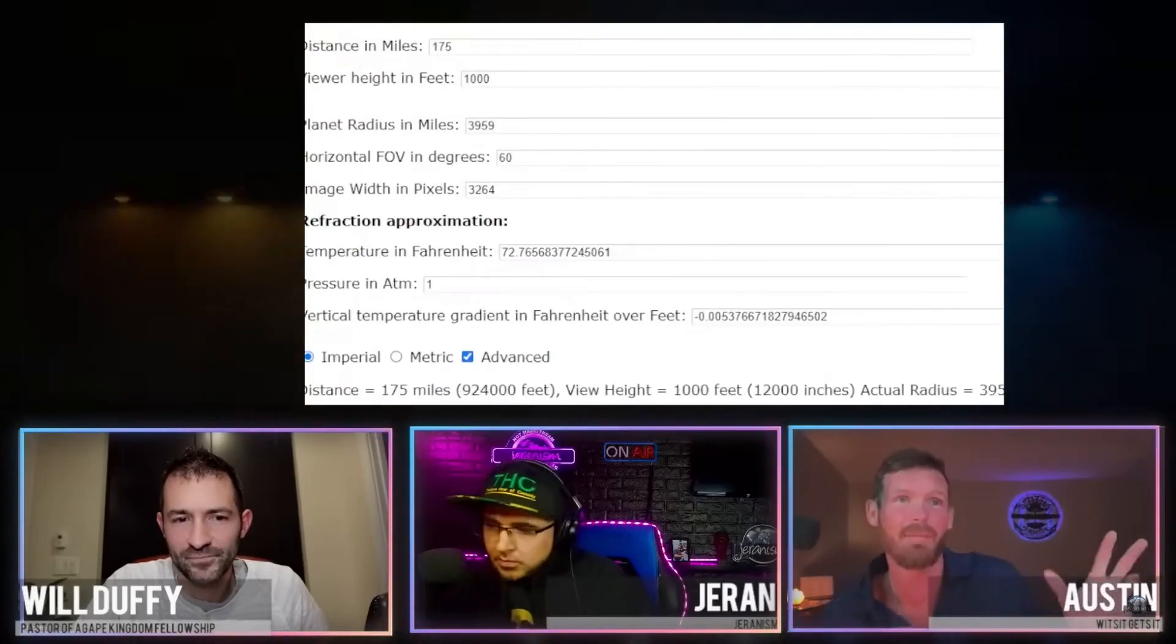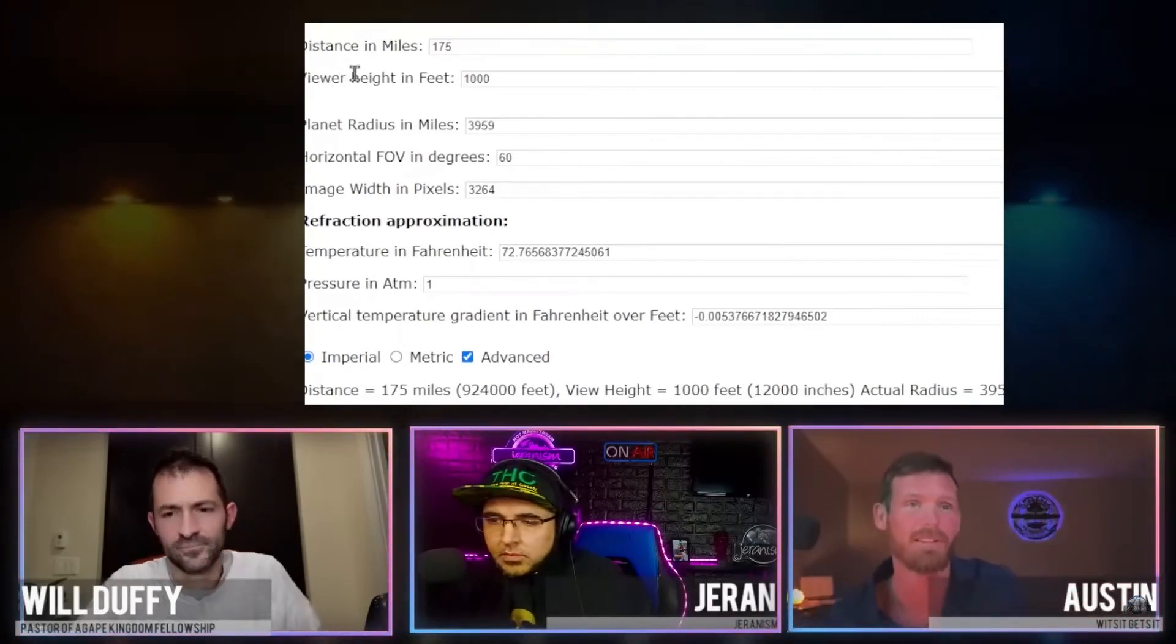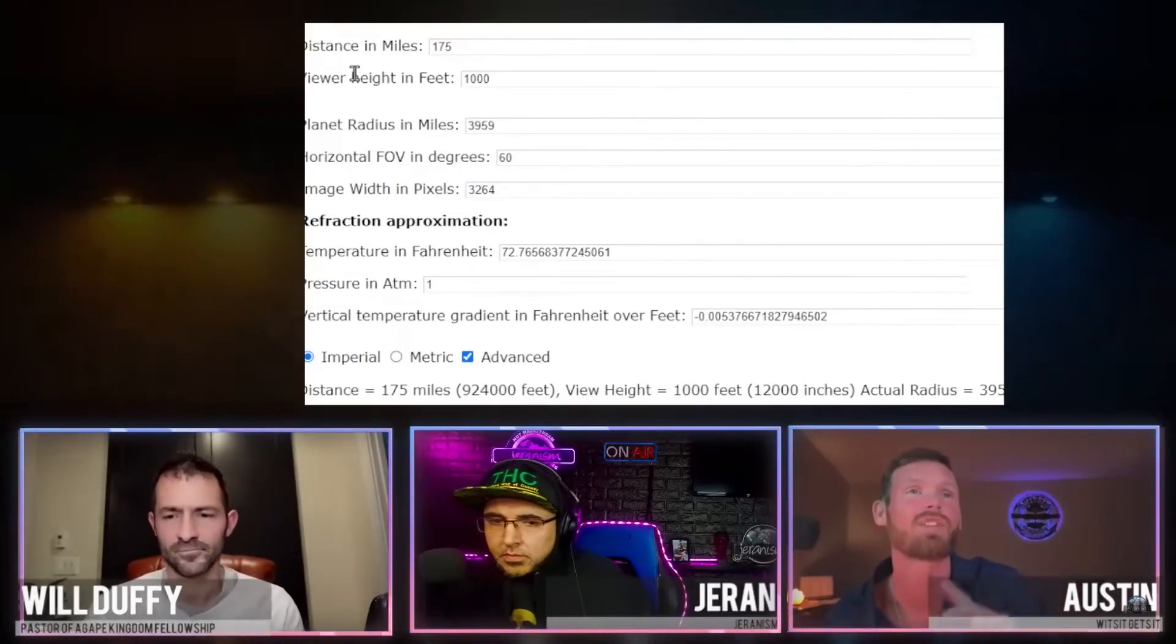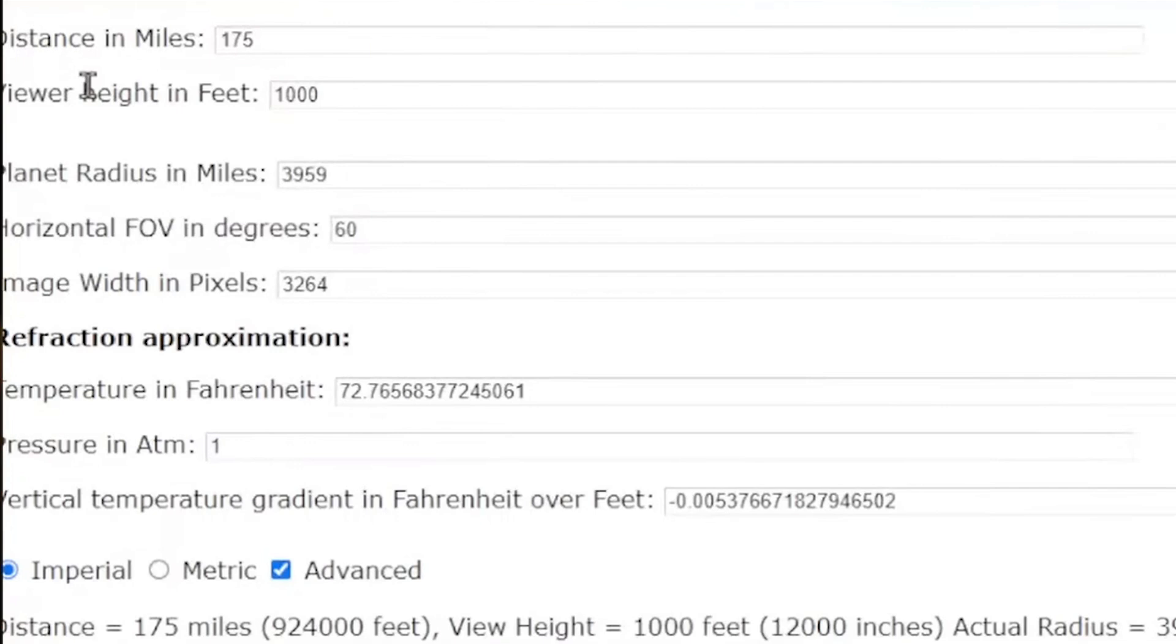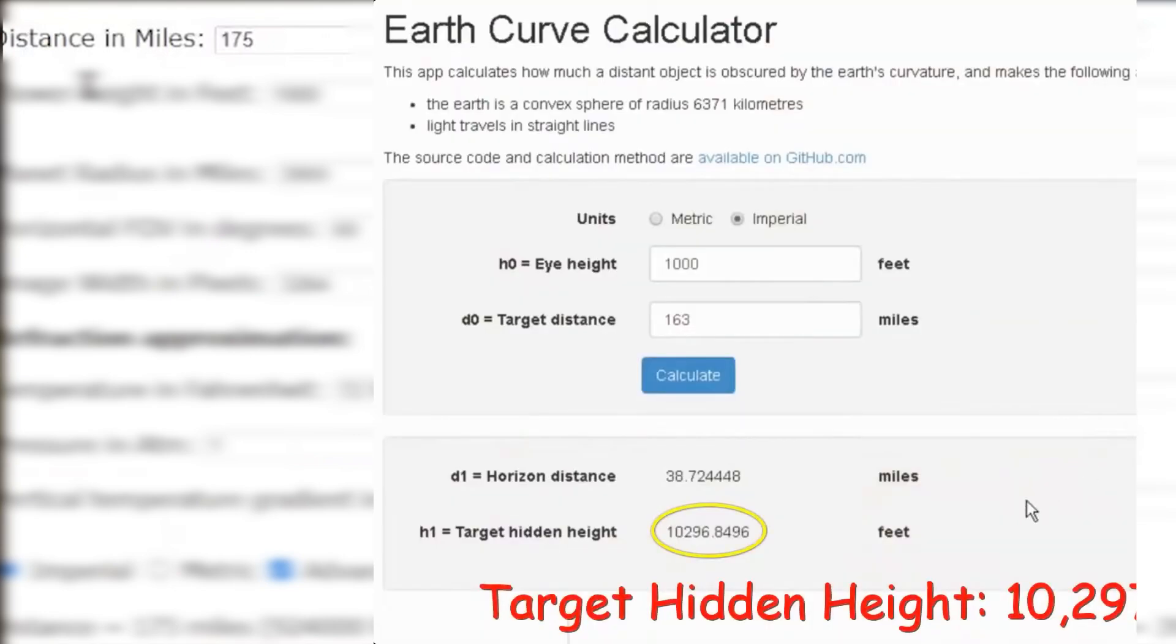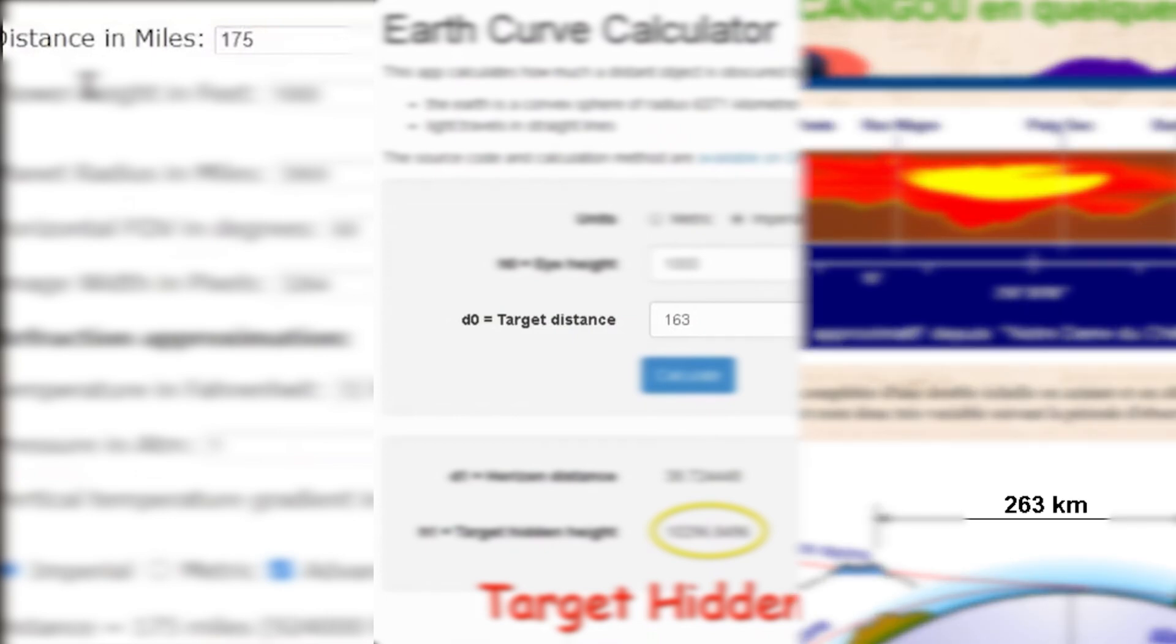During the debate between Will Duffy and Austin Witsit, Jaren tried to bring up some calculations. And although Will didn't want to say anything about the observations and the calculations and steered the conversation away from the numbers, we have the values that Jaren wanted to discuss on screen. We see him claim an observer's height of a thousand feet, probably coming from his earlier research on the topic, but also a distance of 175 miles or 282 kilometers. But his earlier video said 163 miles and the website states 263 kilometers, which is the same. So the numbers that Jaren was going to show us are not the same as this separate video that he made on the topic earlier. And fair enough, the video that he was playing during the debate was actually from a different location. Let's have a look.